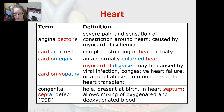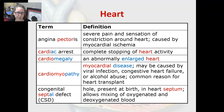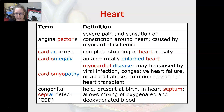Let's start with heart pathology. Angina pectoris is severe pain and sensation of constriction around the heart. It is caused by myocardial ischemia — ischemia meaning lack of blood flow to the myocardium. It is often referred to as chest pain and can indicate a heart attack. Cardiac arrest is the complete stopping of heart activity. Cardiomegaly is an abnormally enlarged heart.